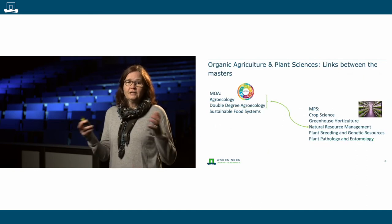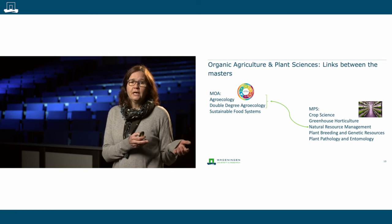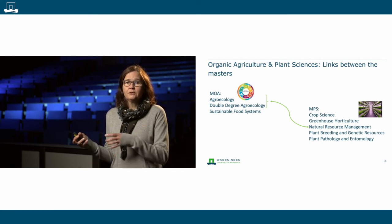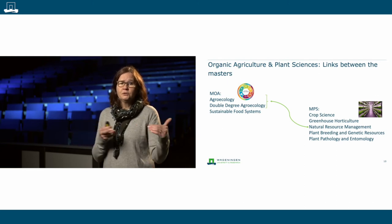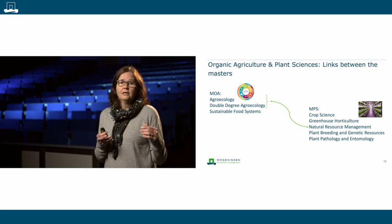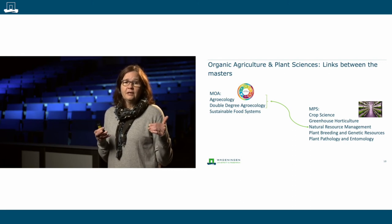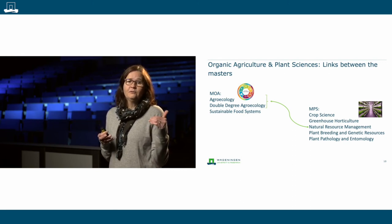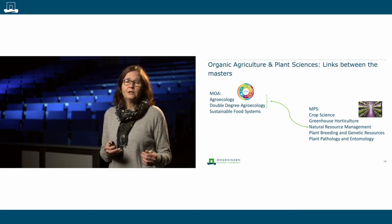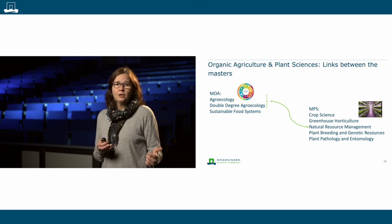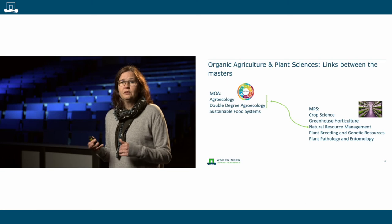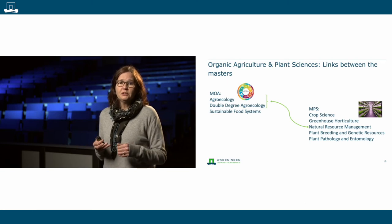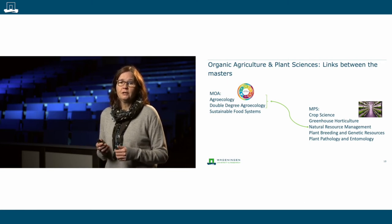When you are still in doubt on whether to choose the Master of Organic Agriculture or the Master of Plant Sciences at Wageningen University, it is good to know where those two programs link. I would advise you to have a closer look at the composition and content of the Master Specialization Agroecology of the Master of Organic Agriculture, and compare that with the content of the Specialization Natural Resource Management in the Master of Plant Sciences.